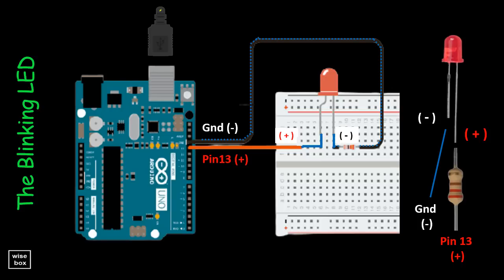This setup uses the breadboard to easily connect the LED, resistor, and the Arduino board. As long as the connections are correct, we would get the desired output.